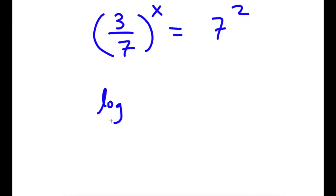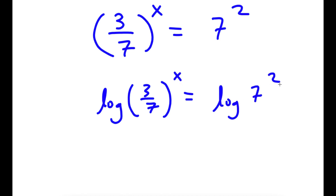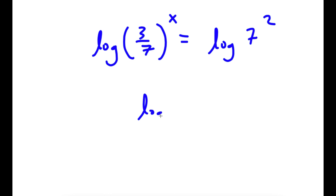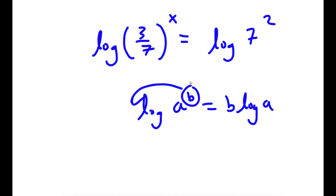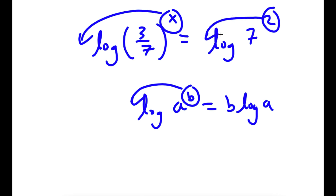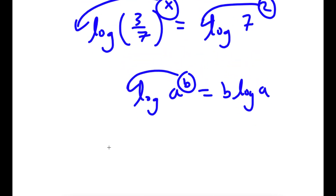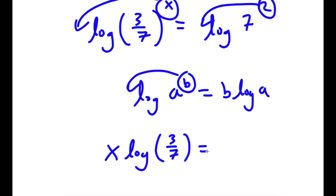And now I'm going to take the log on both sides. So I have log of 3 over 7 to the power of x is equal to log 7 squared. And if I have something in the form log a to the power of b, I can move this exponent b to the front — this is going to be equal to b times log a. So I can move x to the front, and move 2 to the front. So now I have x times log 3 over 7 is equal to 2 times log 7.